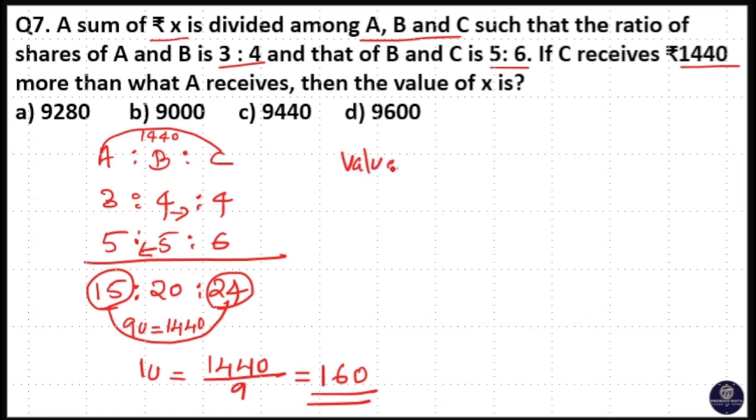Value of x is total unit, that is 15 plus 20 plus 24. 20 plus 24, 44. 44 plus 15, 59.